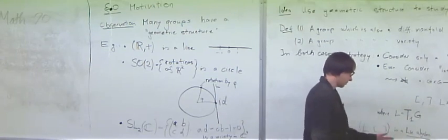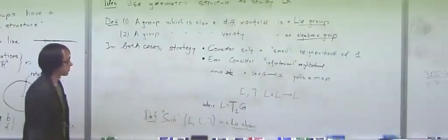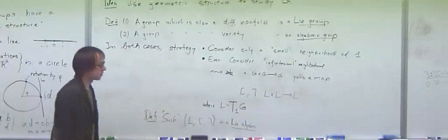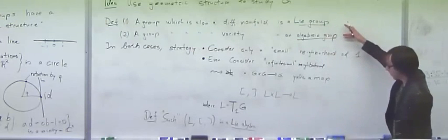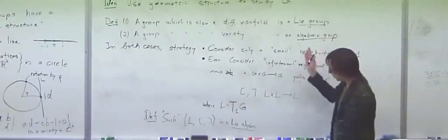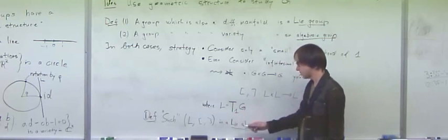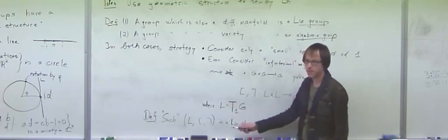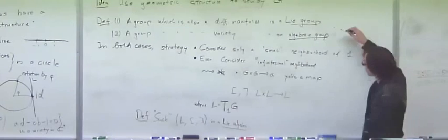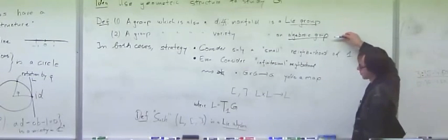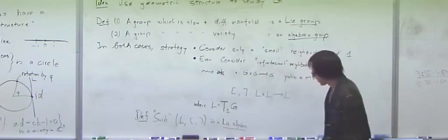Note that the terminology is slightly non-systematic. For both Lie groups and algebraic groups, we can do this trick and study the tangent space of the identity. But in both cases we call the resulting thing a Lie algebra — so maybe you would want to call it a Lie algebra and an algebraic algebra or something, but it's called a Lie algebra.